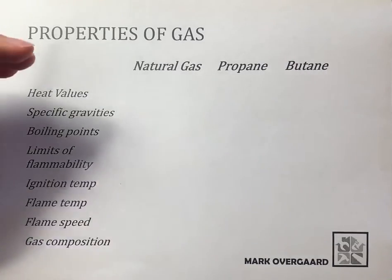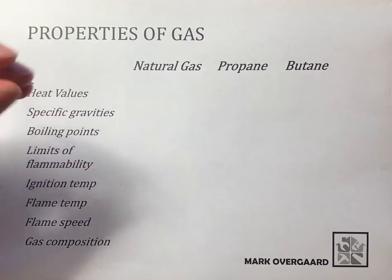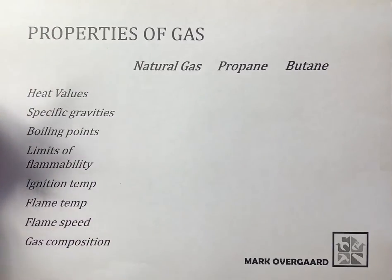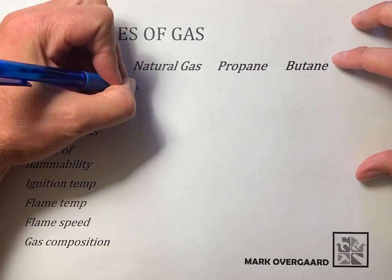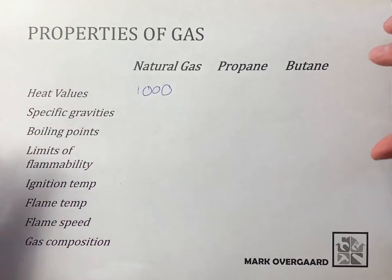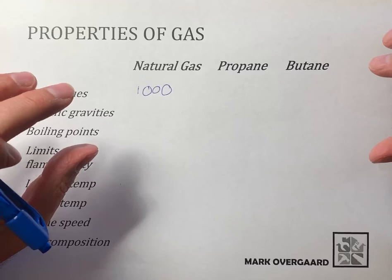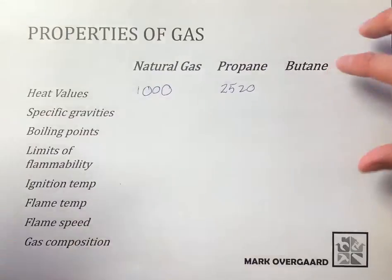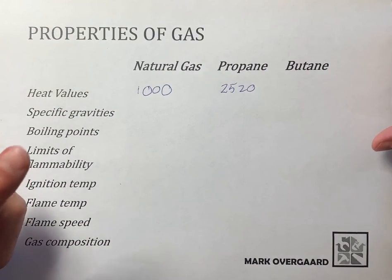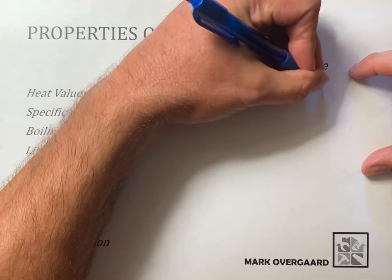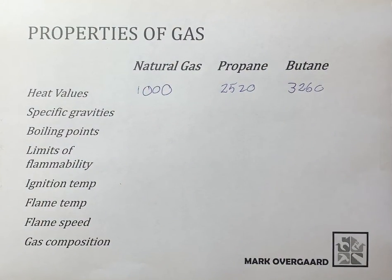Heat values — basically, if you take a cubic foot of either natural gas, propane, or butane and you burn it, how much heat energy do you get? We measure this in BTUs, or British Thermal Units. For natural gas, you get 1,000 BTUs per cubic foot. Propane is a little bit more — 2,520 BTUs per cubic foot. Butane is even a little more at 3,260 BTUs per cubic foot.